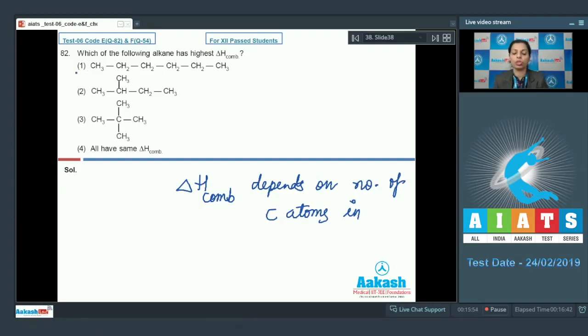If I talk about the first option that contains maximum number of carbon atoms, there are total six carbon atoms present in the chain, while in other cases in the second option there are five carbon atoms in the chain. Further, in the third option there are again five carbon atoms. So which would have the maximum heat of combustion? Definitely option 1 contains that species and that's why option 1 was the correct answer.